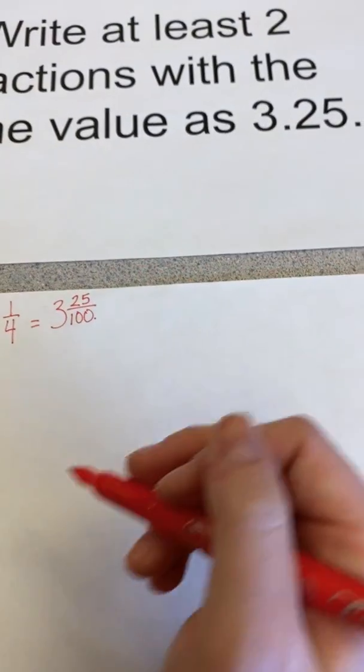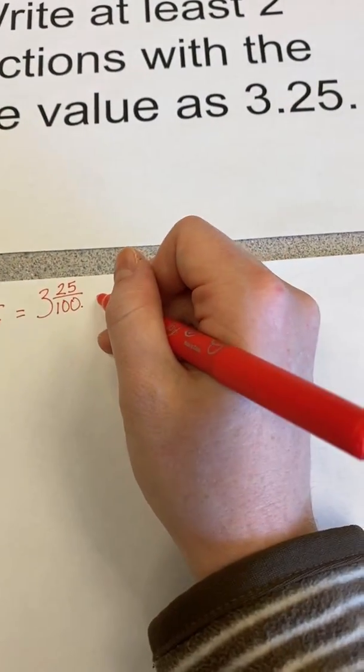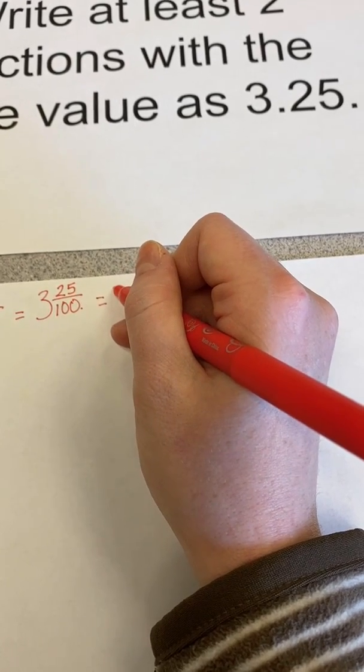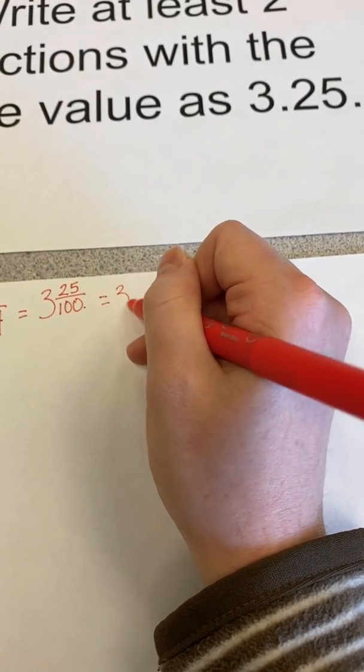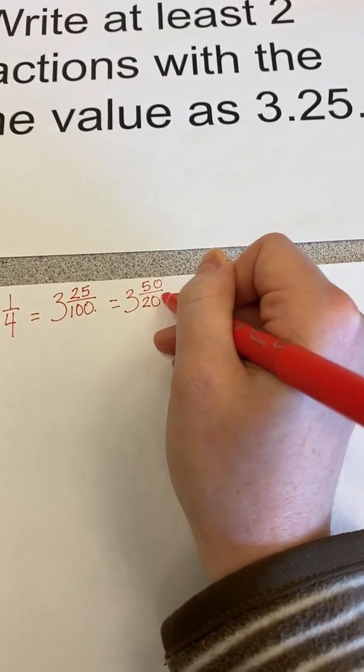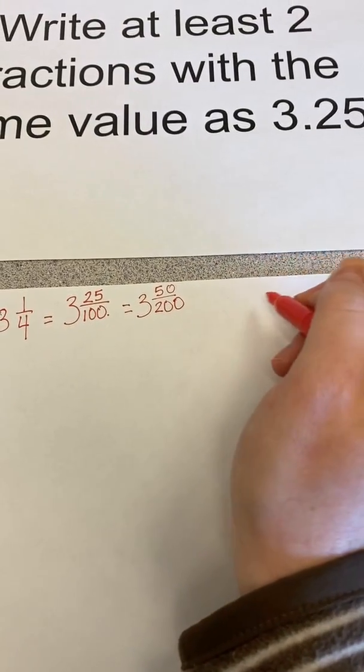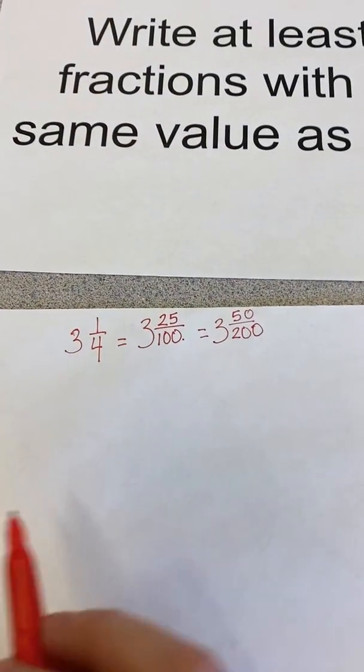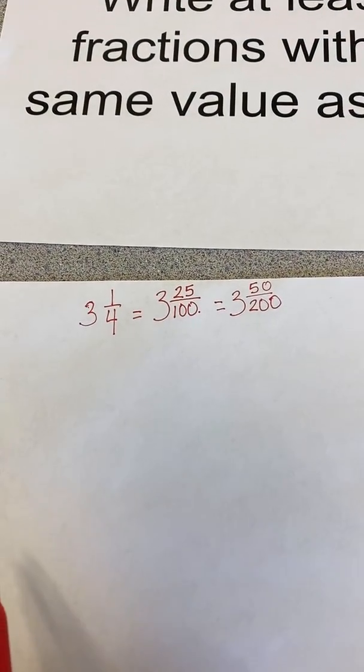And I could also find another equivalent fraction if I wanted and say that that would equal three and 50 over 200. I could continue on using the power of one and my multiples of fractions to continue.